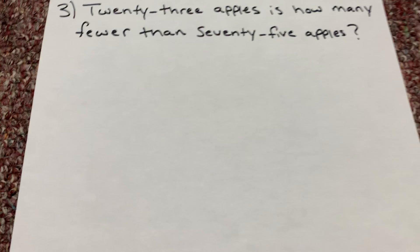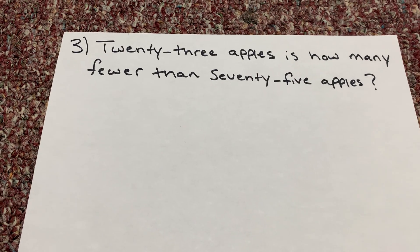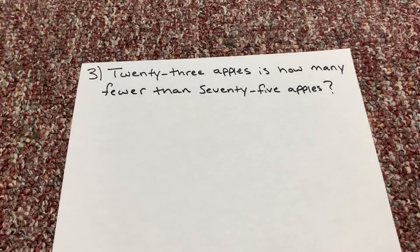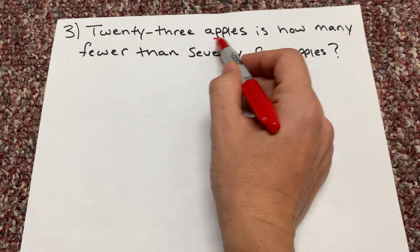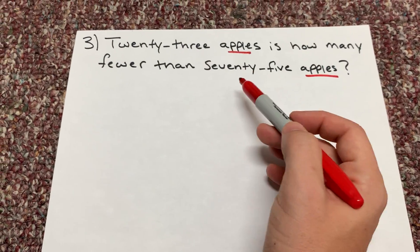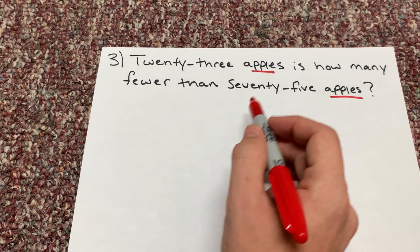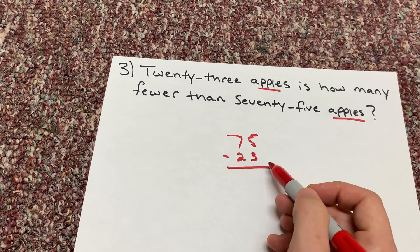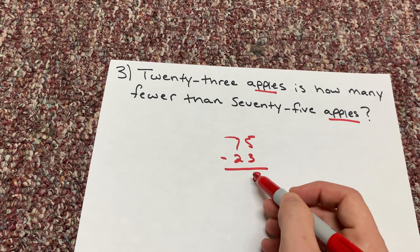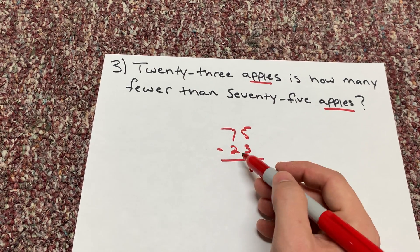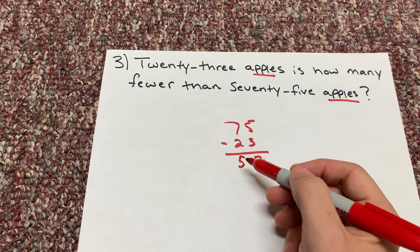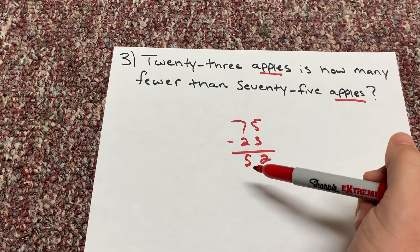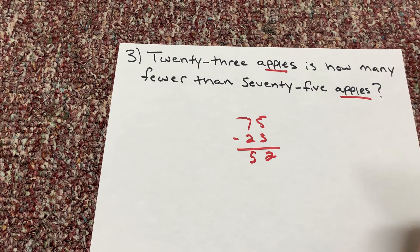Let's look at one more: 23 apples is how many fewer than 75 apples? We're looking at 'fewer,' but we're still doing a comparison. We take our larger number, which is 75, and subtract 23 apples. Subtract 3 from 5, we get 2; subtract 2 from 7, we get 5. So 23 apples is 52 fewer than 75 apples.